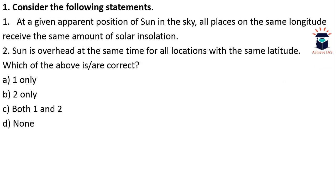Today's topic is geography, and we will be asking questions from it. The first question: Consider the following statements. First, at a given apparent position of the Sun in the sky, all places on the same longitude receive the same amount of solar insolation. Second, the Sun is overhead at the same time for all locations with the same latitude. Which of the above is correct?